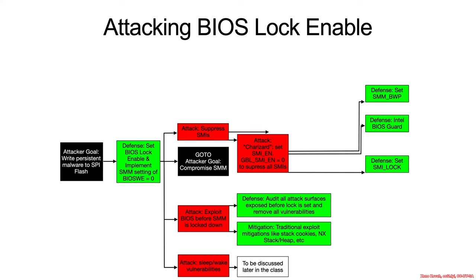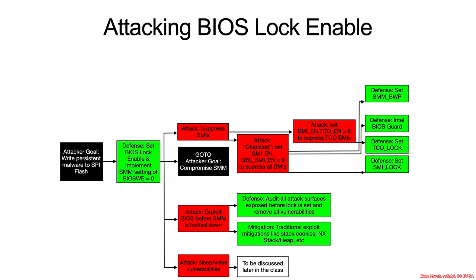There's another form of SMI suppression that involves registers called TCO, for Total Cost of Ownership registers. TCO stuff was used for miscellaneous functionality around things like detection of intrusion into a chassis of a desktop system — things that cause a system management interrupt so that SMI code could respond by wiping secrets, for example.